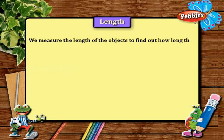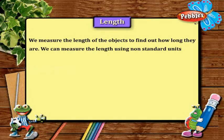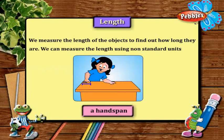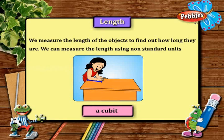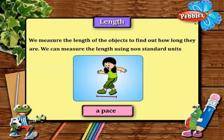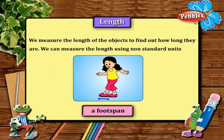We measure the length of objects to find out how long they are. We can measure the length using non-standard units such as a hand span, a cubit, a pace, or a foot span.